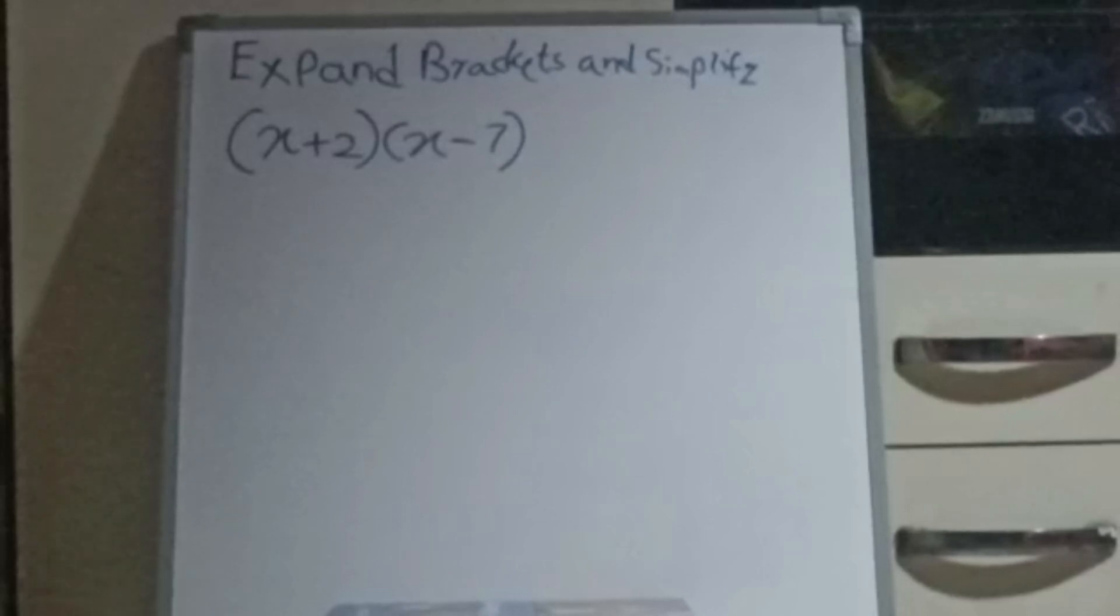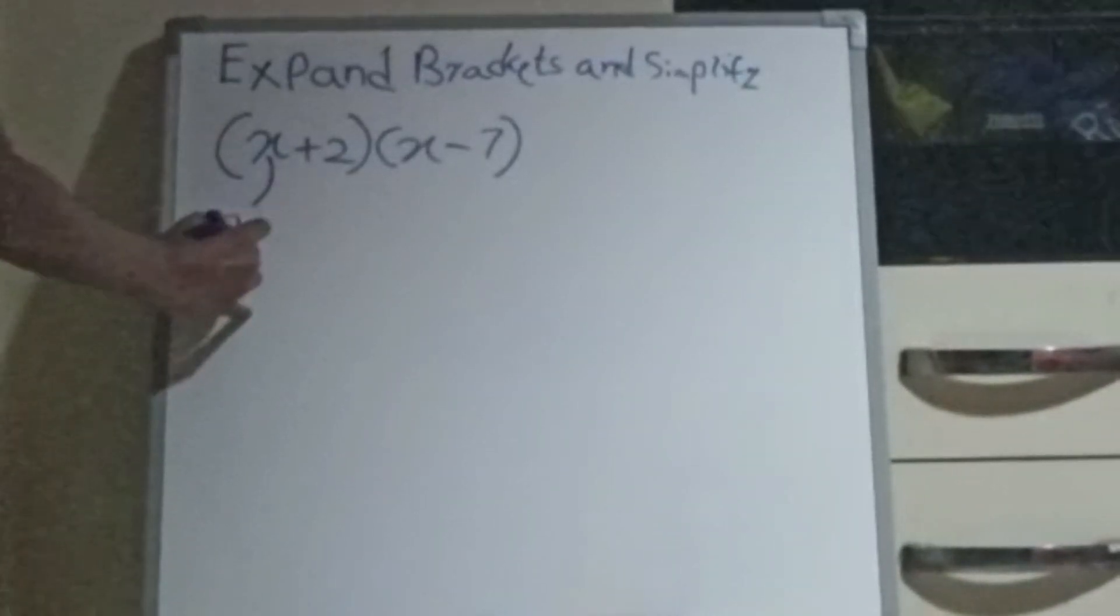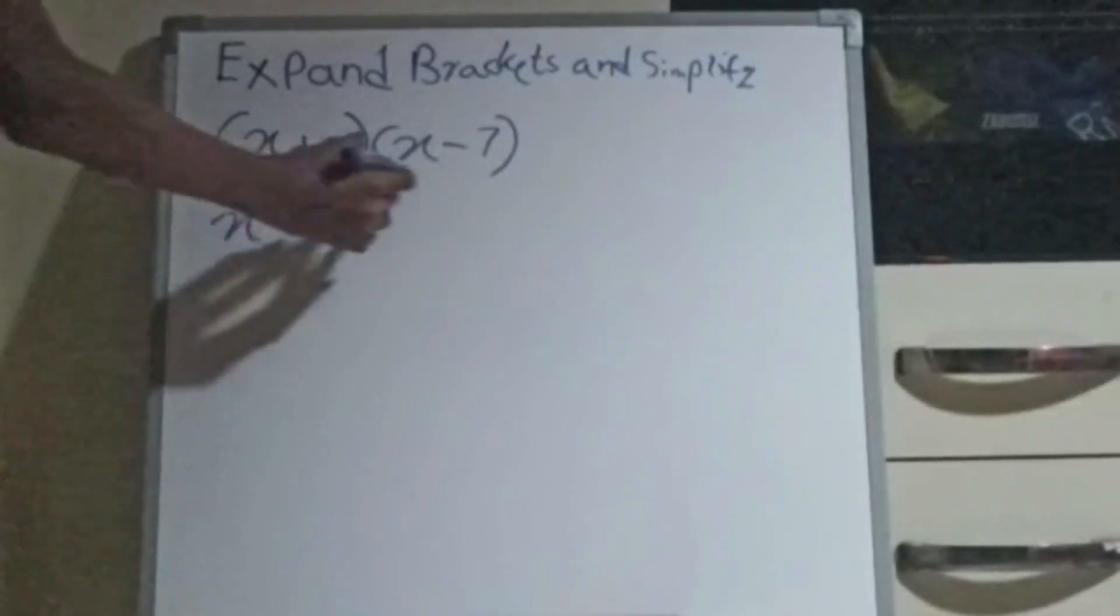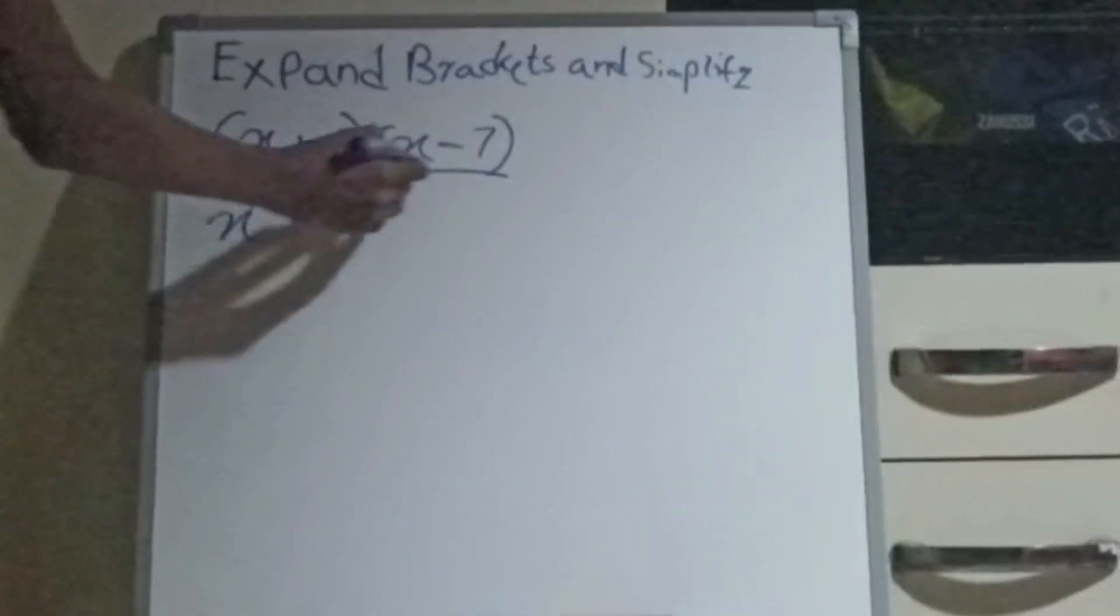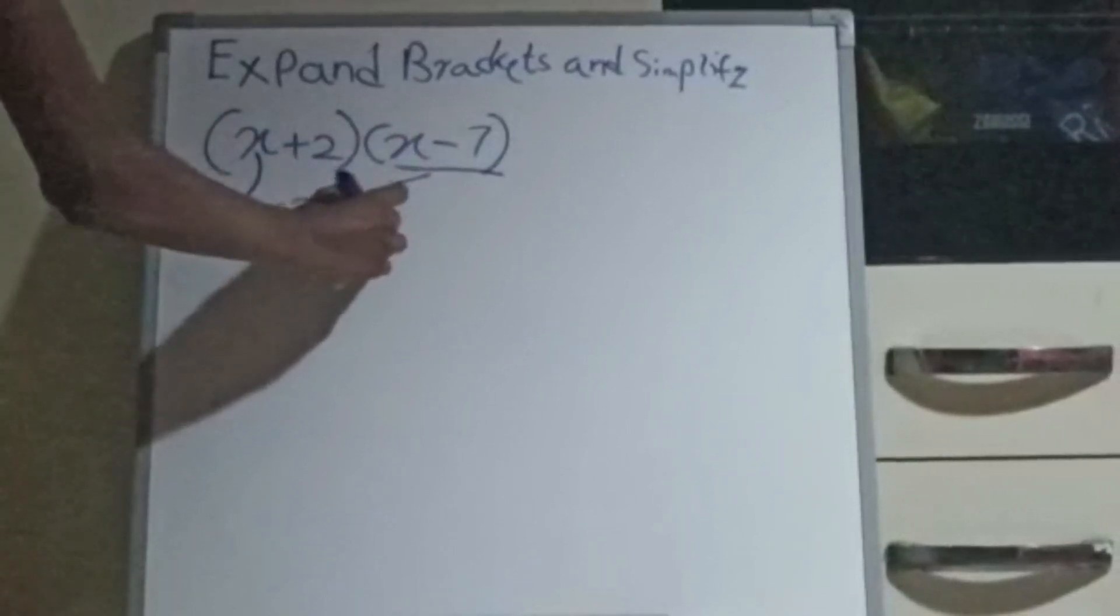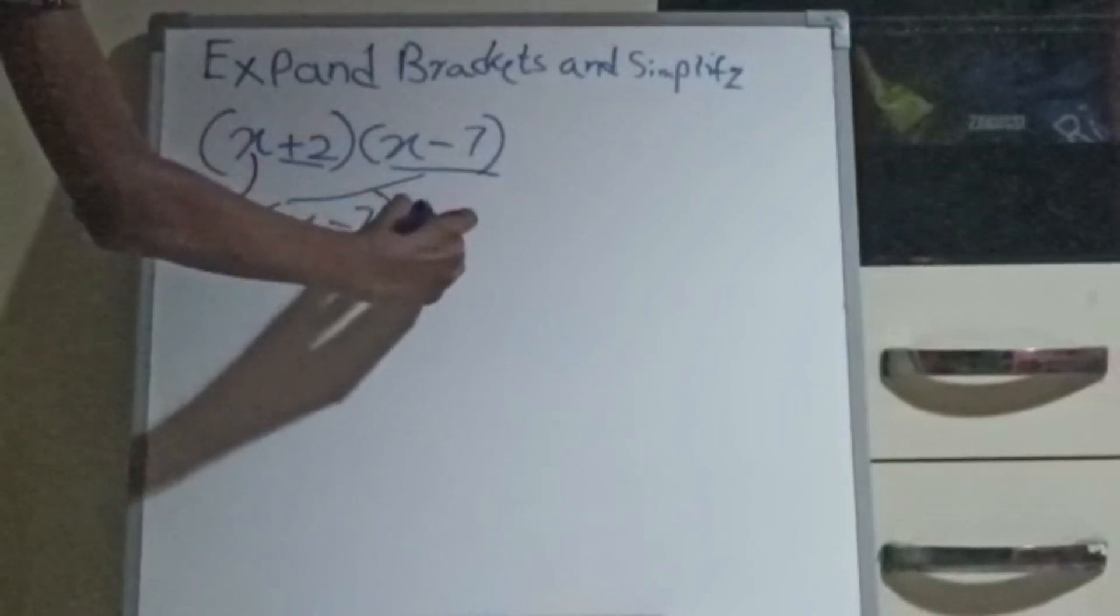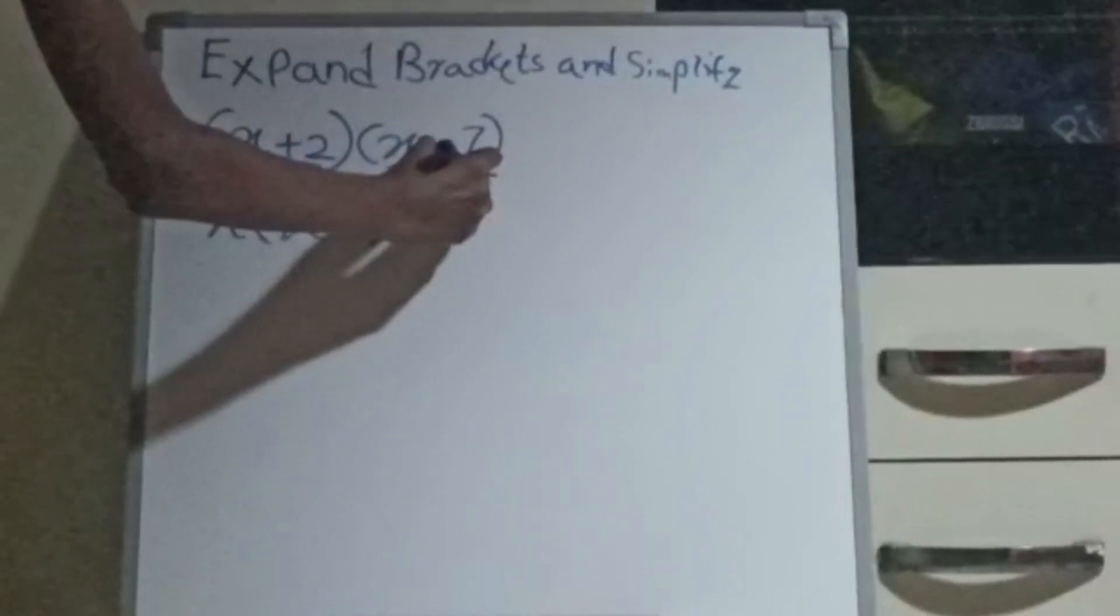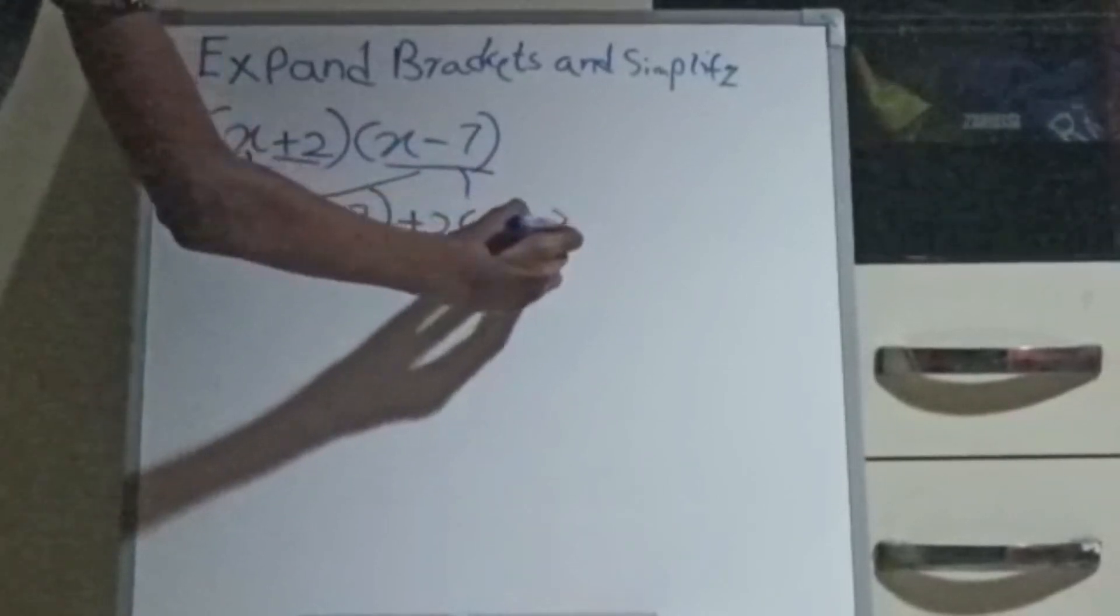First of all, you would take this x out. x, then here x-7 within the brackets come to here. x-7, then here plus 2. Again the brackets here.